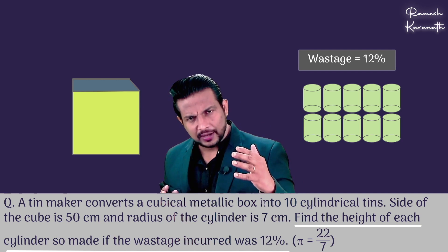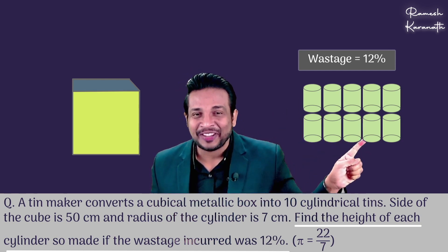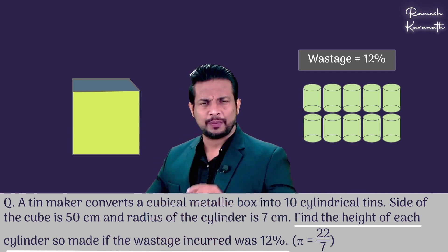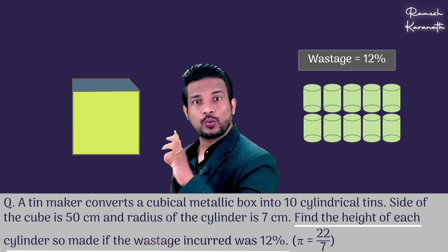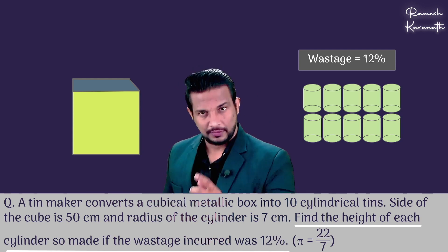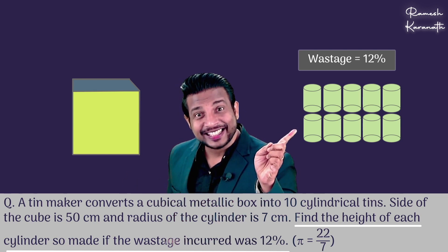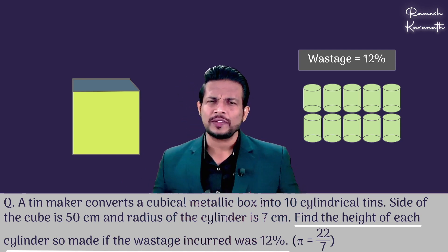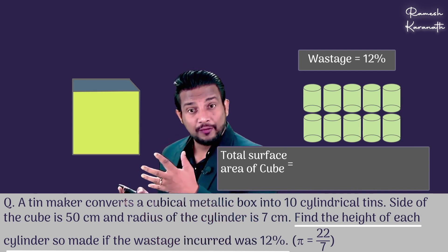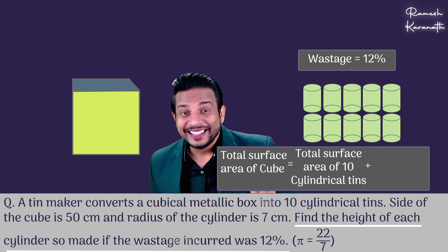After the wastage is accounted for, 88% of the total surface area is what remains and is used. So the concept is: the total surface area of the cube is equal to wastage plus the total surface area of 10 cylindrical tins. For example, if the surface area is 100 cm², and 12% wastage occurs, then 88% of that — 88 cm² — is used for all the cylindrical tins.